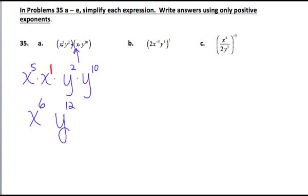When you raise a power to a power in Part B here, everything gets raised to the third power. The 2 gets raised to the third power. The negative 5 and this 3, the shortcut now is to multiply those exponents. So that would be x to the negative 15. And then the 4 and the 3 would give us y to the 12th. So raising a power to a power, we multiply those exponents. Even this 2, it has an exponent of a 1, and it's 1 times 3 is that 3 right there.